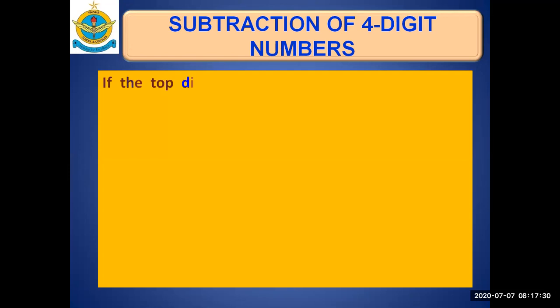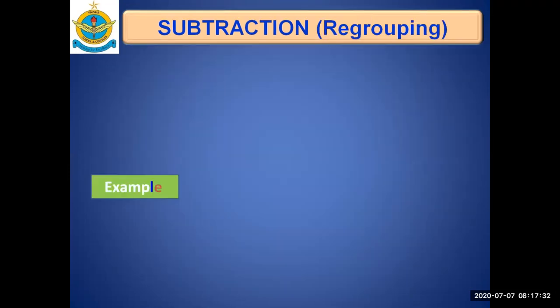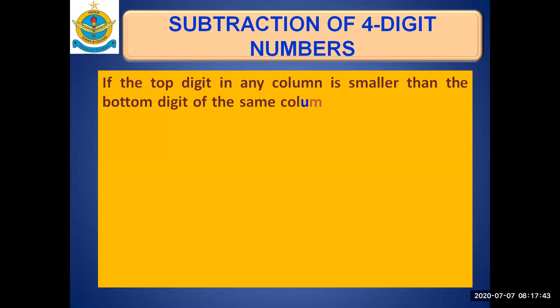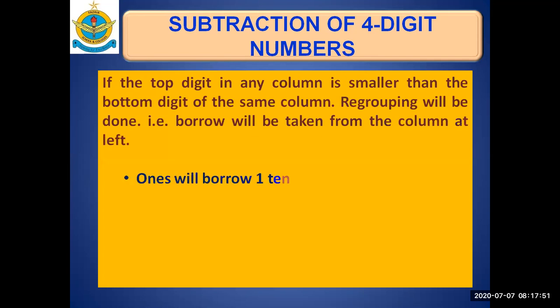If the top digit in any column is smaller than the bottom digit of the same column, regrouping will be done. We cannot do it like if we have 7 at top and 9 at bottom. We cannot subtract 9 from 7 directly. We will do the regrouping.